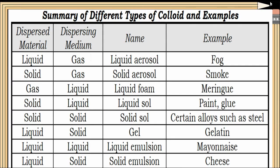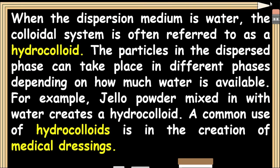These are the different types of colloids and their examples. When the dispersion medium is water, the colloidal system is often referred to as a hydrocolloid. The particles in the dispersed phase can take place in different phases depending on how much water is available. For example, jello powder mixed in with water creates a hydrocolloid. A common use of hydrocolloids is in the creation of medical dressings.